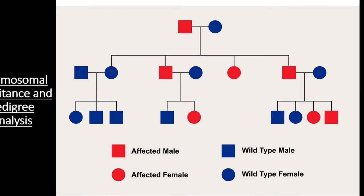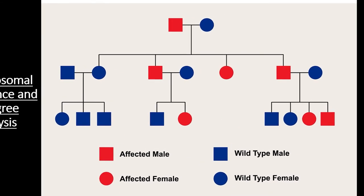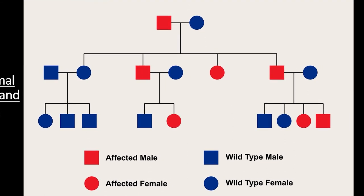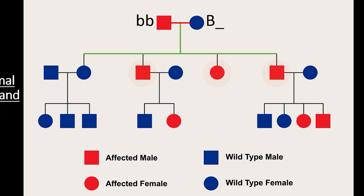Let's take a look at another example. This pedigree offers a few clues: a cross between an affected male and a regular female produces many affected offspring, but a cross between two wild-type individuals produces no affected individuals. The affected individuals could be homozygous recessive — in that scenario, the wild-type individual would have to carry a dominant allele and be heterozygous, yielding a one-to-one ratio of affected to wild-type offspring. The ratios are close to this, so we can't rule it out.